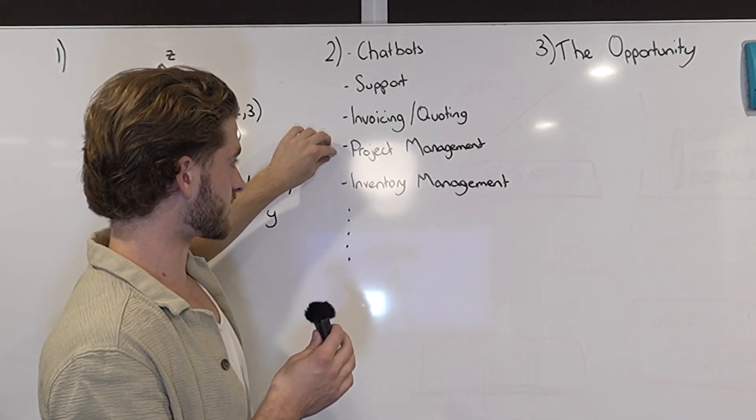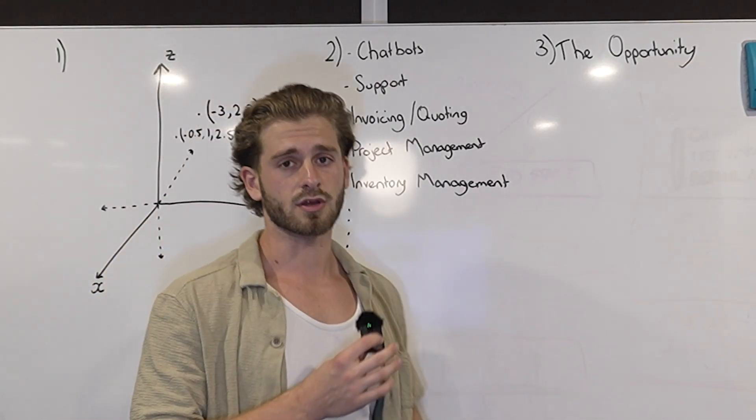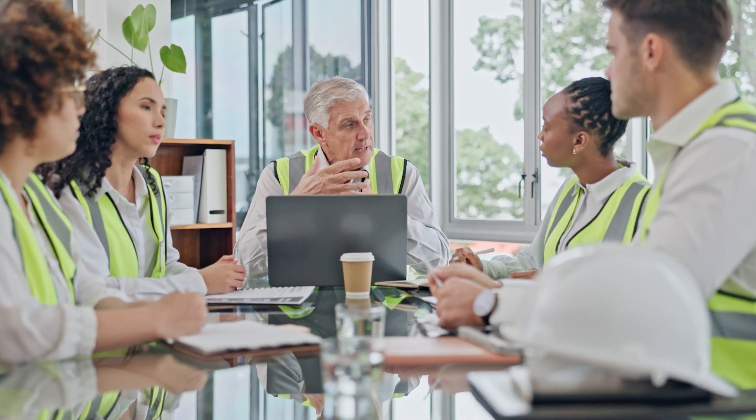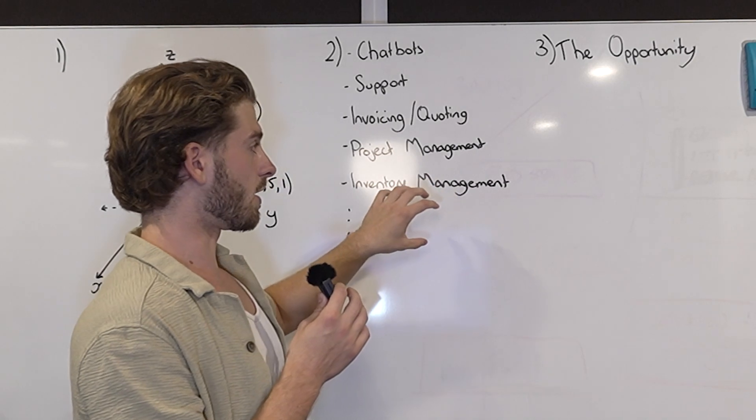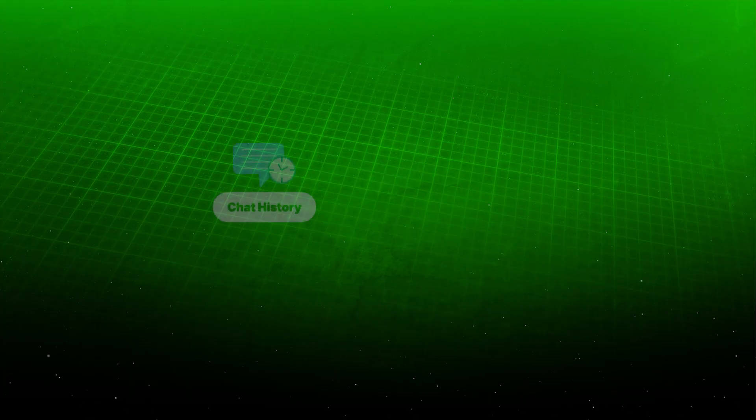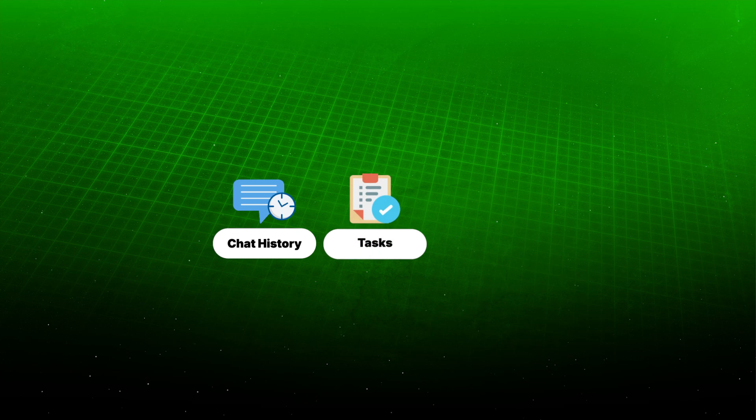What happens is a task will get dropped into the job, it'll start in the to-do column, and then as it gets worked on it'll move through the doing column, then to the review column, and then to the completed column.